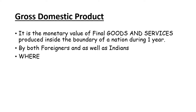GDP is the monetary value of all goods and services produced within the boundary of the nation in one financial year. We need to remember mainly two points. First, only final goods and services - not intermediate goods. Only the value of final goods and services is considered in GDP. Second, only goods produced inside the boundary - only within Indian territories. That is why the term 'domestic' is used.